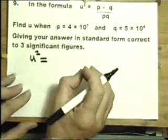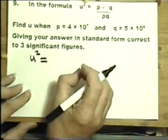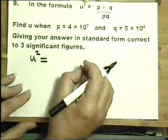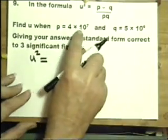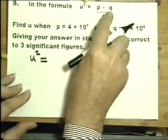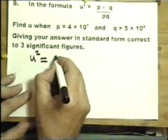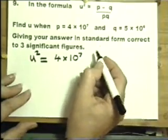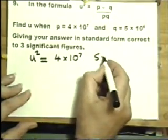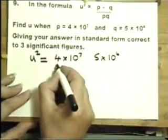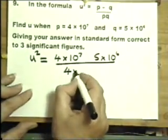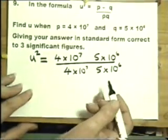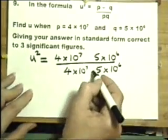Now, the temptation would be to pick up the calculator straight away and start pressing buttons. Resist. Write down some working out. Quite simply, replace the p with the value of p, replace the q with the value of q. So that's p, and this is q, and this is p, and this is q. Now, on purpose, I've missed the signs out.